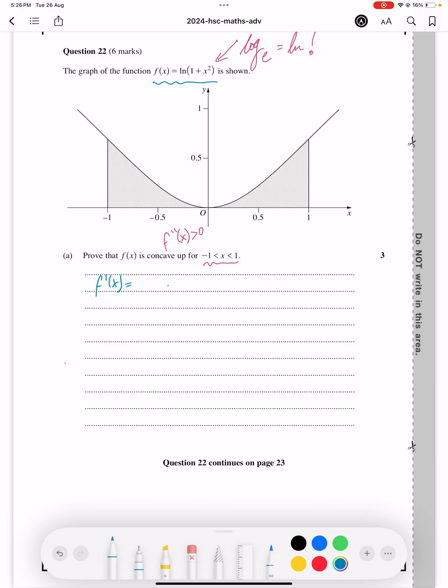To derive a ln curve, you simply make a fraction. On the denominator, we're writing 1 plus x squared, which is what's after the ln. And then on the top, we write the derivative of what is on the denominator, so that would be 2x. And that's it, that is how to derive a ln function.